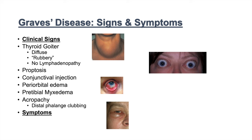These eye findings are more specific to Graves' disease as opposed to general hyperthyroidism. Other ocular symptoms include diplopia — double vision — and corneal abrasions, because with the proptosis and exophthalmos the eyes bulge out, become dried out, and are susceptible to corneal injury.